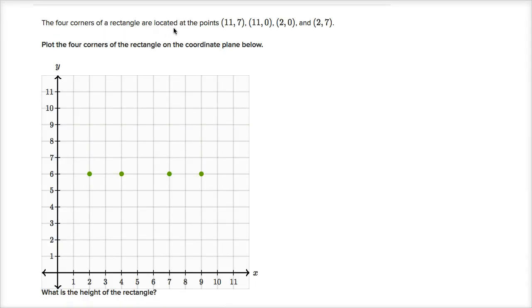The four corners of a rectangle are located at the points (11, 7), (11, 0), (2, 0), and (2, 7). Plot the four corners of the rectangle on the coordinate plane below.